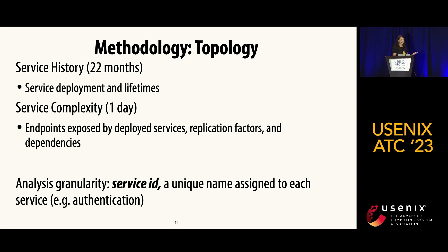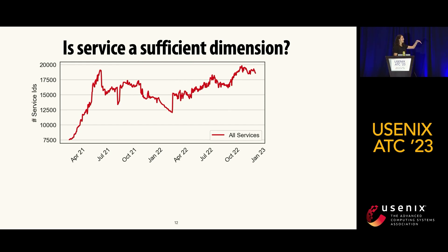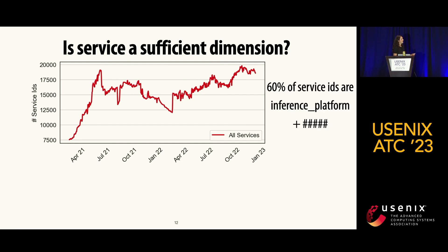We looked at the number of unique service IDs over time. On the x-axis is the 22 months of historical data, and on the y-axis is the number of unique service IDs deployed each day — the number of unique pieces of functionality being managed at Meta. There's a ton of fluctuation, which was kind of shocking — we wouldn't expect unique services to vary this much day to day.